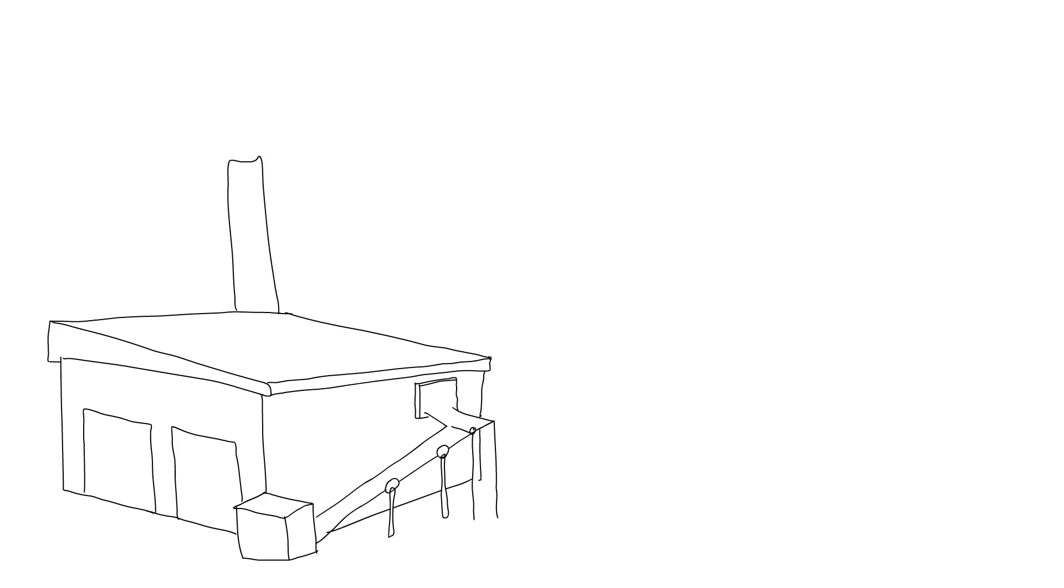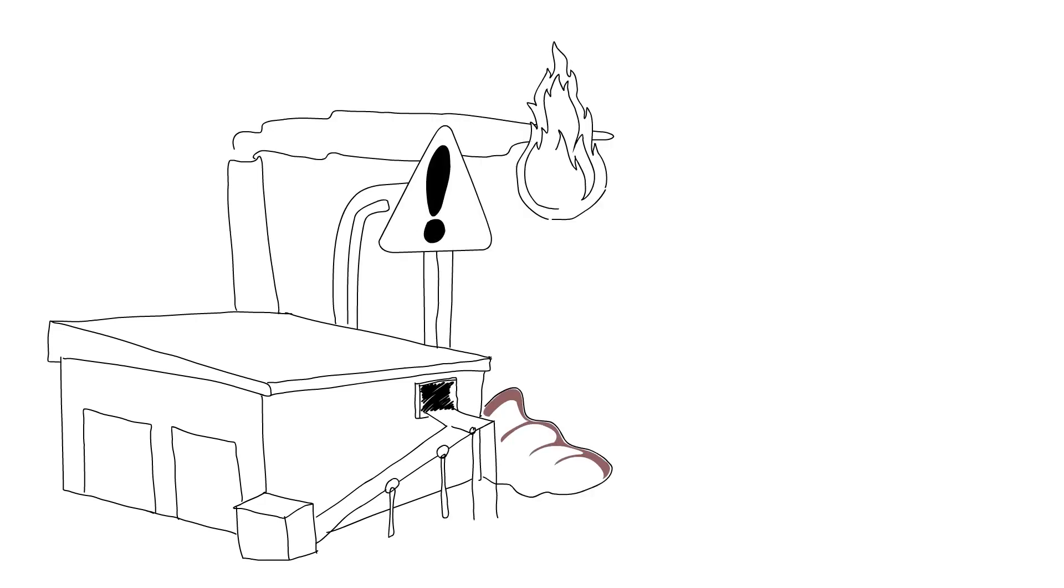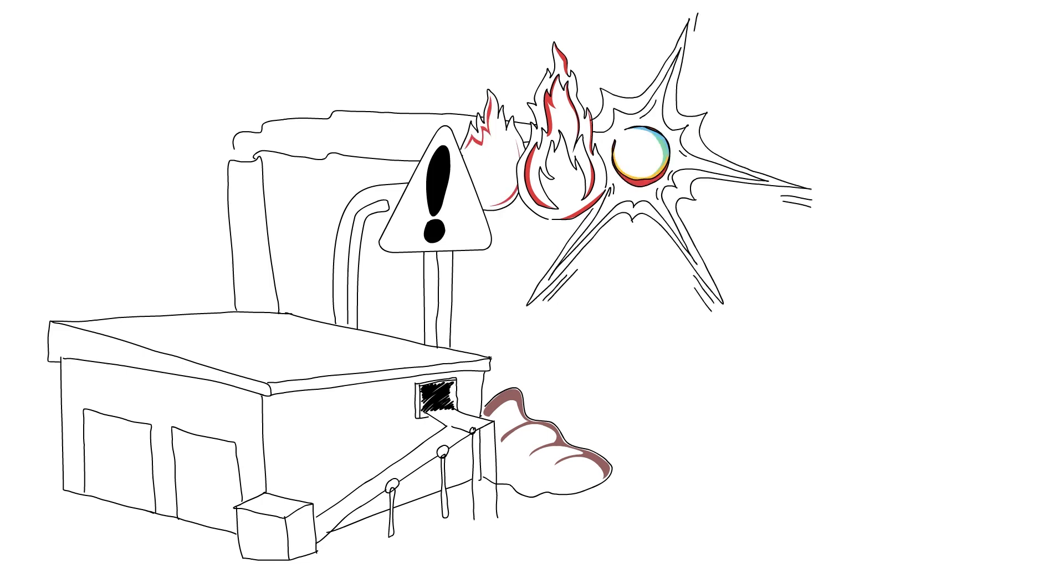Workplaces that manufacture engineered wood products or wood pellets may be at risk of fire, deflagration, or explosion due to the buildup of combustible off-gases within enclosed areas, such as buildings and process equipment like dryers.